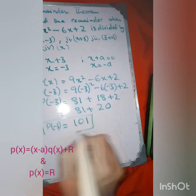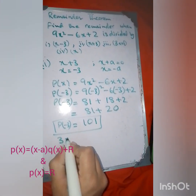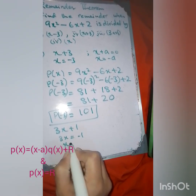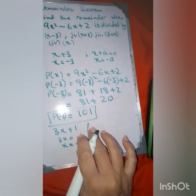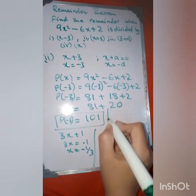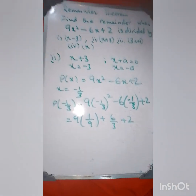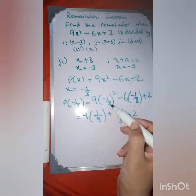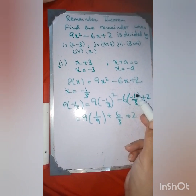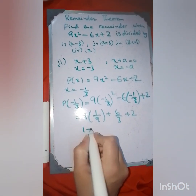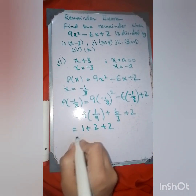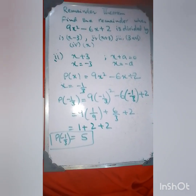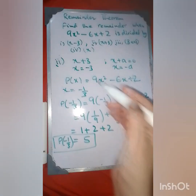For part 3, the divisor is 3x + 1. Setting 3x + 1 = 0 gives x = −1/3. We substitute x = −1/3 into p(x): p(−1/3) = 9(−1/3)² − 6(−1/3) + 2 = 9 × 1/9 + 6/3 + 2 = 1 + 2 + 2 = 5. The remainder is 5. I hope you have understood how we are doing this.